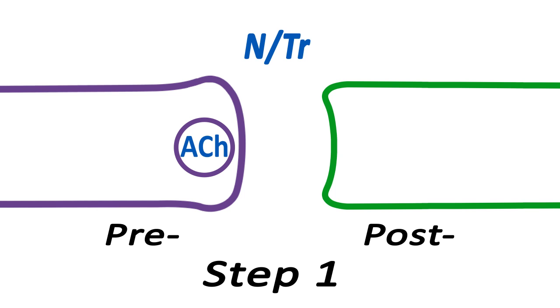Step 1. The signal is the AP reaching the synaptic terminal. In response, calcium ion channels in the presynaptic membrane open, and calcium ions flow into the synaptic terminal from high to low concentration areas.